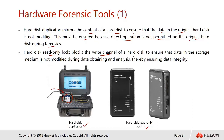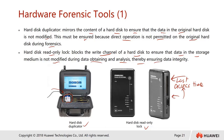The hard disk read-only locker blocks the write channel of a hard disk to ensure that data in the storage medium is not modified during data obtaining and analysis, ensuring data integrity. This is very important — for example, a file's 'last access time' attribute could change if you open the file. The read-only locker locks down the entire hard disk so that not even file attributes can be changed.